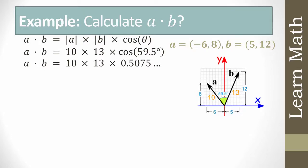cos(59.5°) = 0.5075. So a·b = 10 × 13 × 0.5075 = 65.98 ≈ 66.